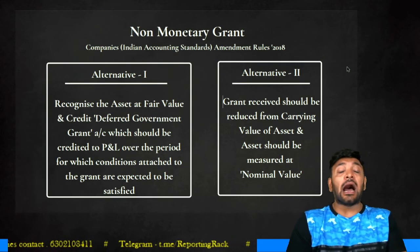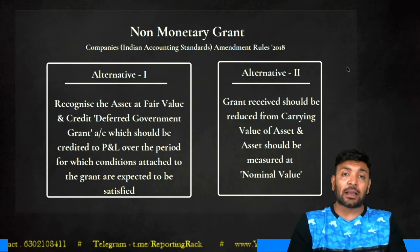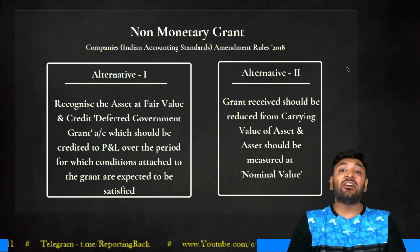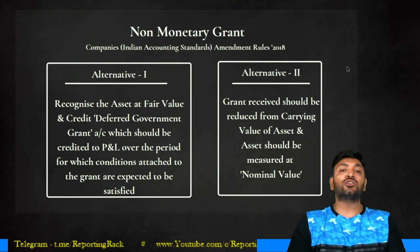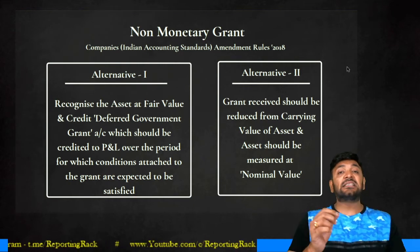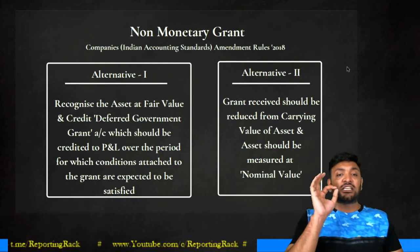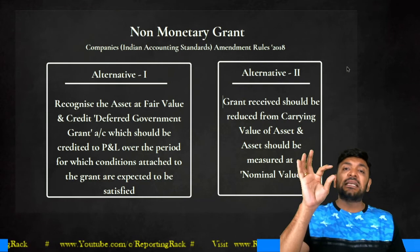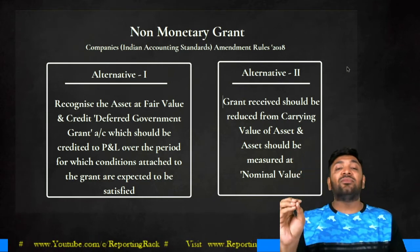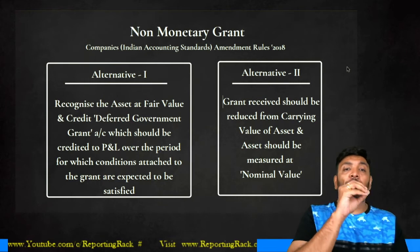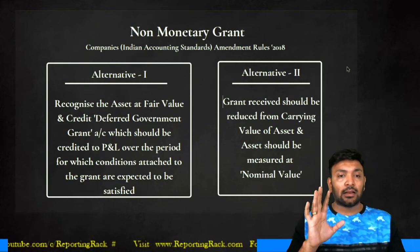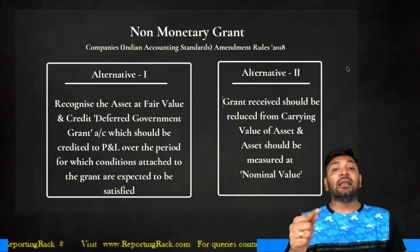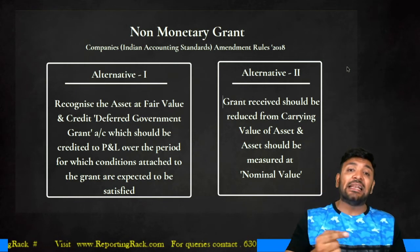For non-monetary grants, originally there was only one treatment under Ind AS: non-monetary grants should always be measured at fair value. The asset given free of cost is measured at fair value, the credit goes to a deferred government grant account, the asset is depreciated, and the deferred government grant account is credited to P&L over the useful life of the asset. This is called the income approach, Alternate 1.